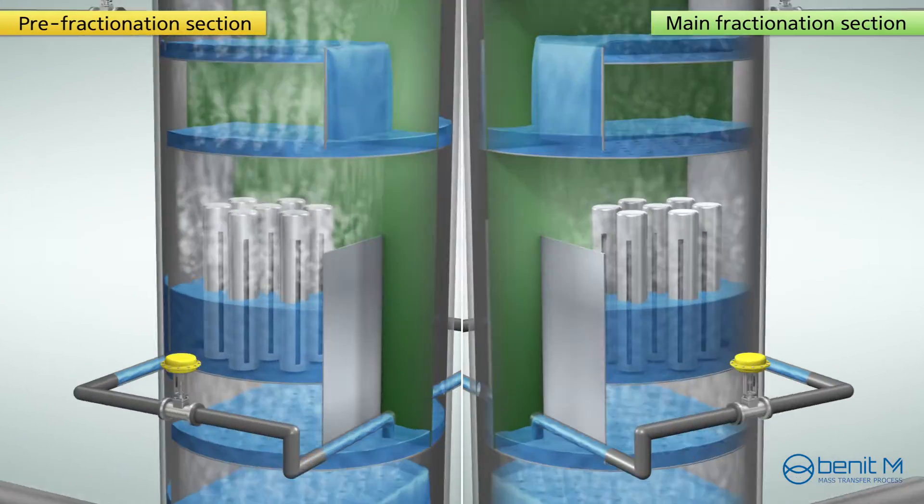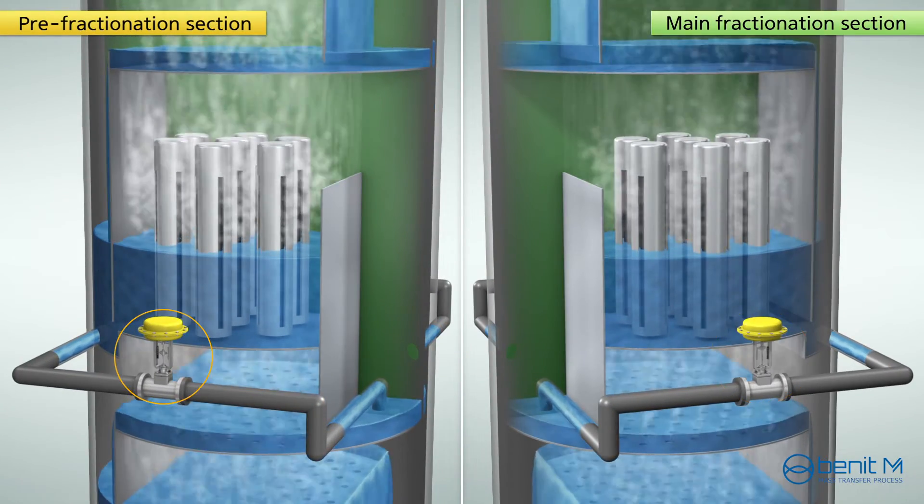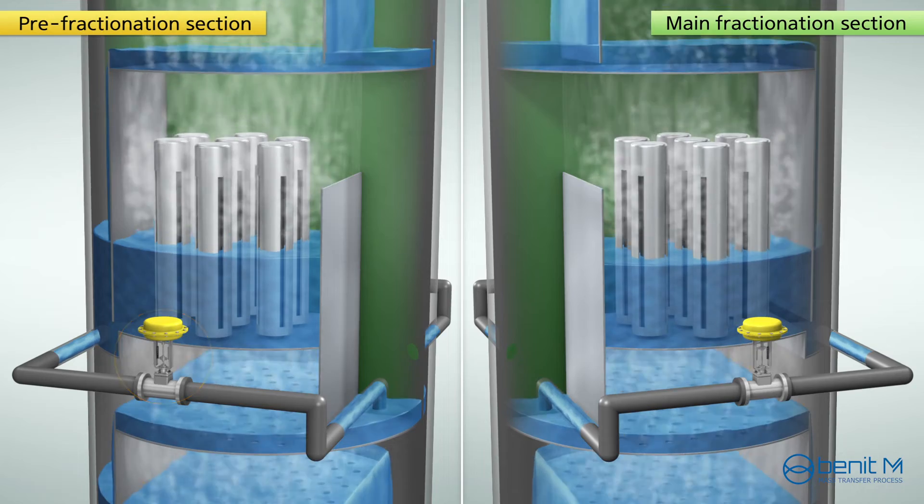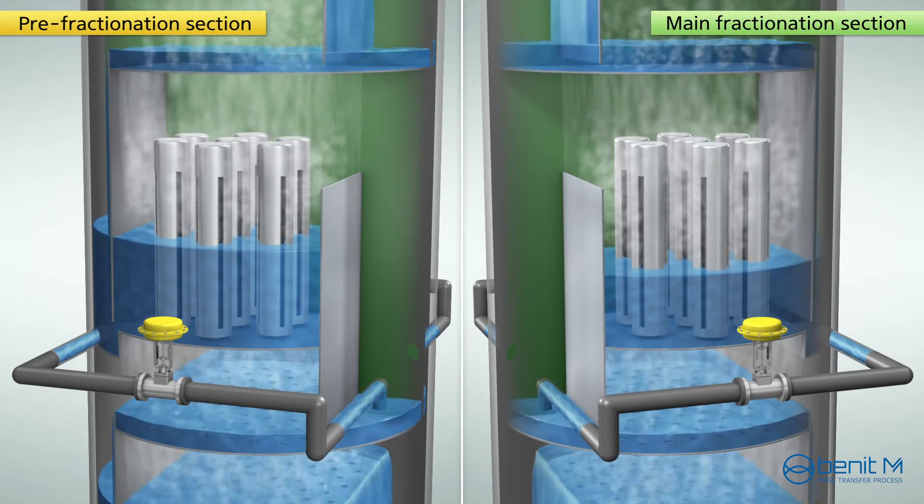Then, lower the liquid level on the chimney tray in this section, while lifting the liquid level on the chimney tray in pre-fractionation section.